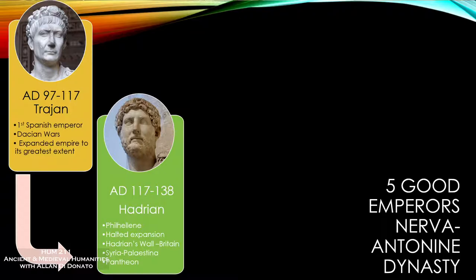I want to point out something about Hadrian's portraiture — there's a new style that creeps in. He was a philhellene, meaning he was a lover of Greek culture. He's the first emperor to wear a beard, which shows an official embracing of Greek culture — the Greeks wore beards, the Romans typically did not. So he instituted this new style because of his love for Greek culture. He spends a lot of time in Athens and actually adds to the building of the city.